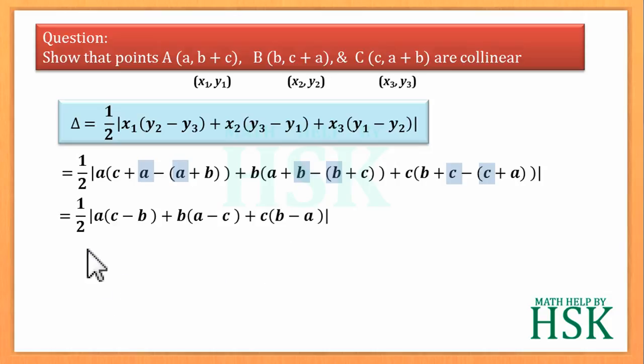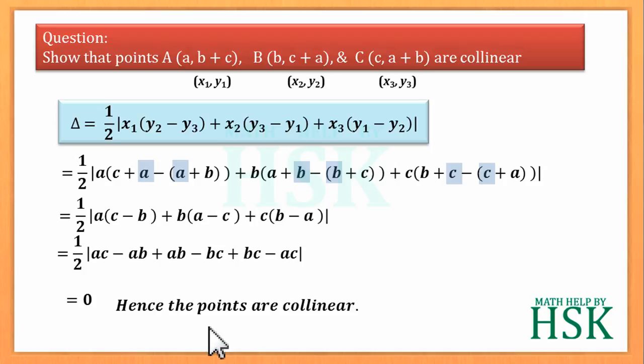Further on simplification we get 1/2 times [ac - ab + ab - bc + bc - ac]. All the terms inside the bracket will cancel. Hence area of the triangle with given vertices will be zero. Hence points are collinear.